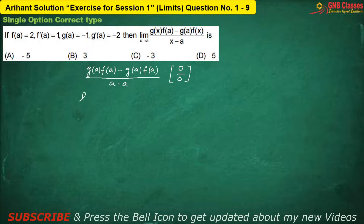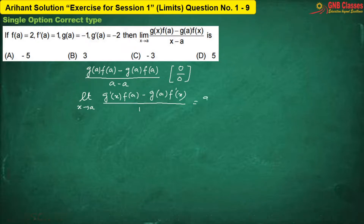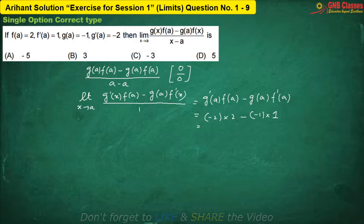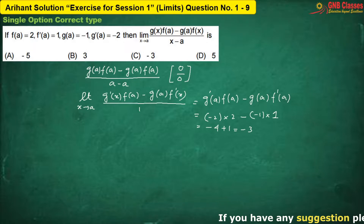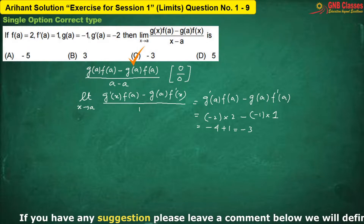After differentiating and putting the limit, the final answer will become minus 3. Hence, option C is correct. Have you understood it? Let us move for the next problem.